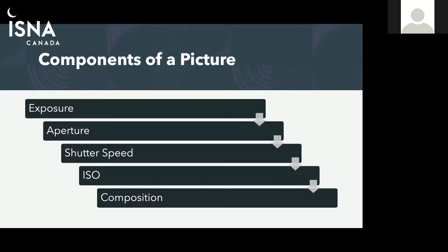ISO is basically how bright or how dark a picture can get. You guys might be able to relate to this. Let's say if you're taking a picture in the daytime outside — sometimes when the sun's too bright, it's very hard to take a picture because the picture might be too bright. Whereas if you're taking a picture at night outside and there's no light, no streetlight, nothing, it's usually going to be very hard to take a picture.